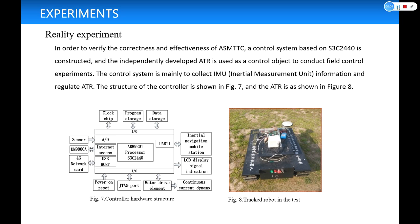In order to verify the correctness and effectiveness of ASMTTC, a control system based on S3C2440 is constructed, and the independently developed ATR is used as a control object to conduct field control experiments. The control system is mainly to collect IMU information and regulate ATR. The structure of the controller is shown in Figure 7, and the ATR is shown in Figure 8.